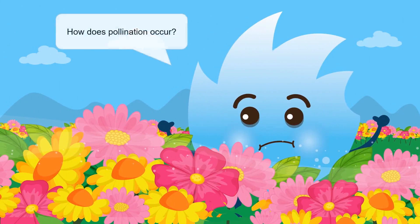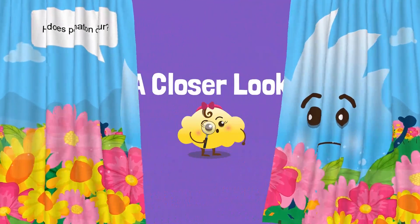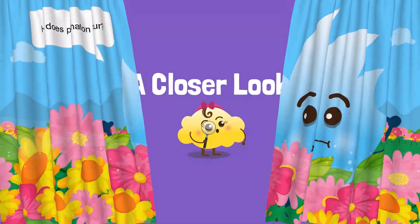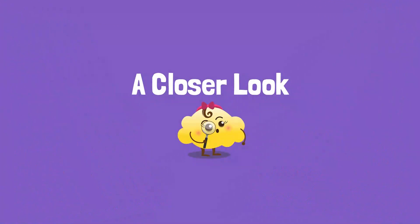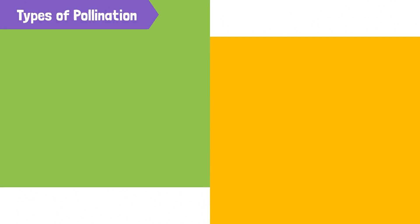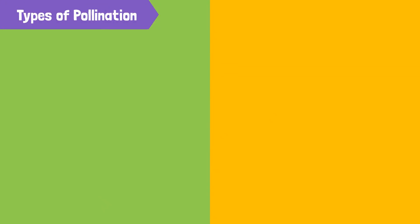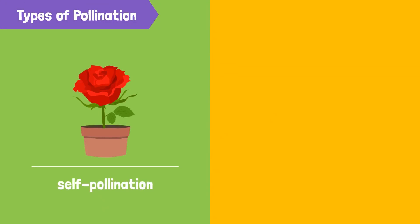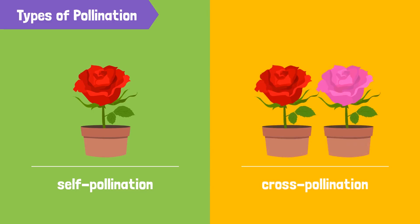Mrs. Coco, so how does this happen? Let's take a closer look. There are two types of pollination: self-pollination and cross-pollination.